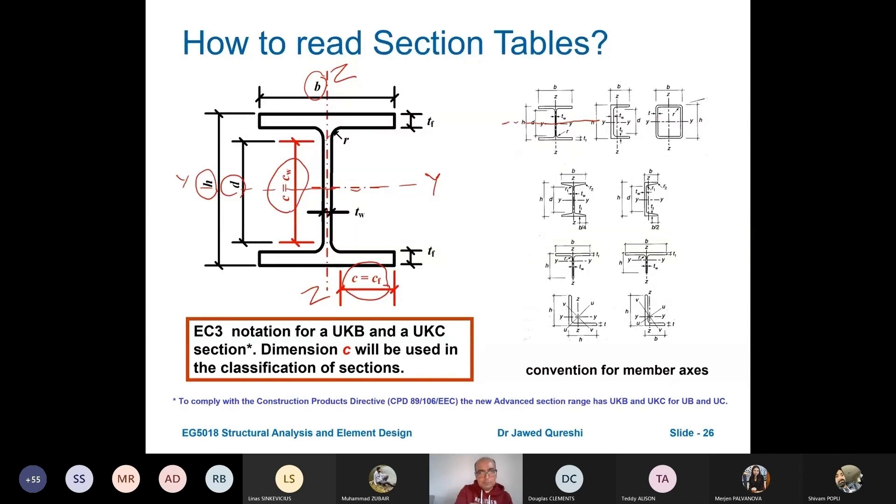This long portion is termed as web. The horizontal portion is termed as flange. And TF is the thickness of flange. TW is thickness of web.